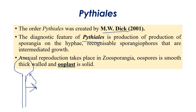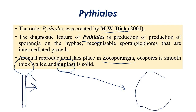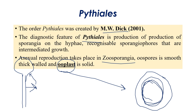Asexual reproduction takes place by means of zoosporangia, and oospores are produced in sexual reproduction. The oospore contains a thick-walled structure. Inside it there is a small smooth bubble-like or vesicle-like structure called the ooplast, which is actually coeloidal in Pythiales.